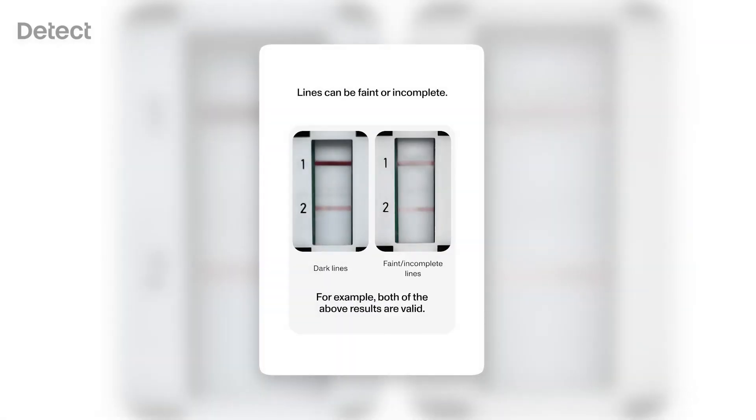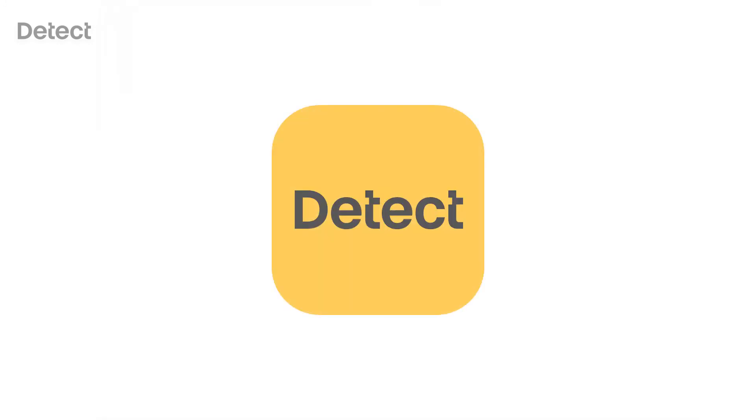After 10 minutes, red lines will appear in the reader window. Lines may be faint. This is normal. Use the Detect app to understand your test results.